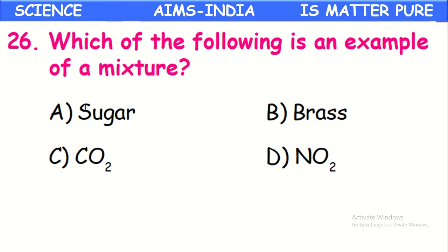Which of the following is an example of a mixture? Sugar is a compound. Carbon dioxide is also a compound. Nitrogen dioxide is also a compound. But brass is an alloy of copper and zinc — two metals are mixed — so brass is a mixture; the remaining three are compounds.